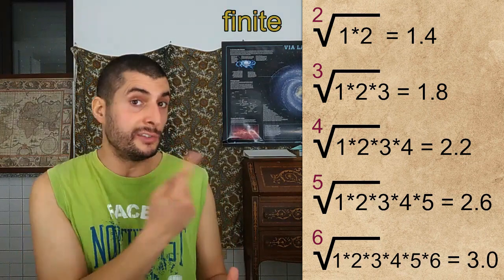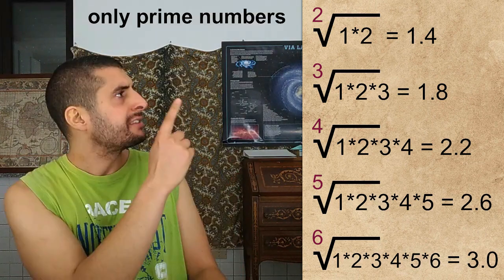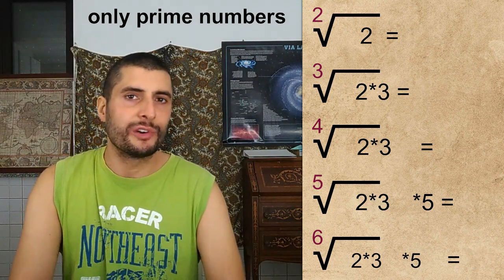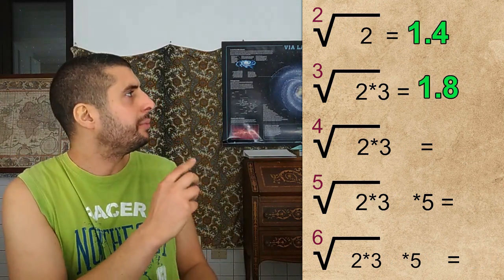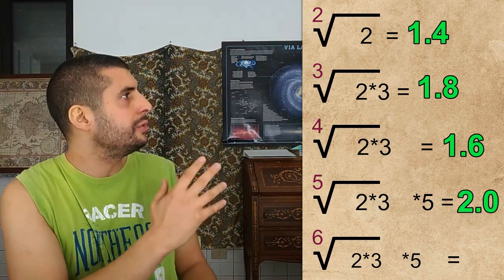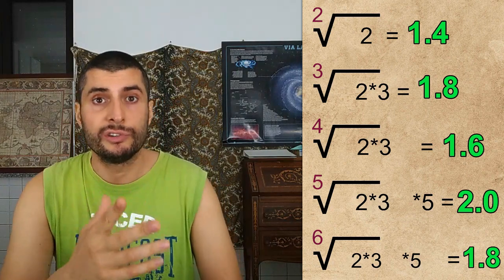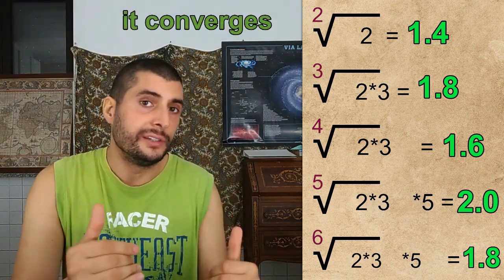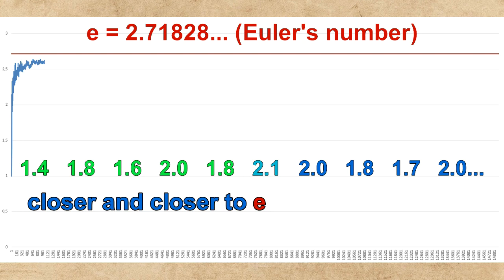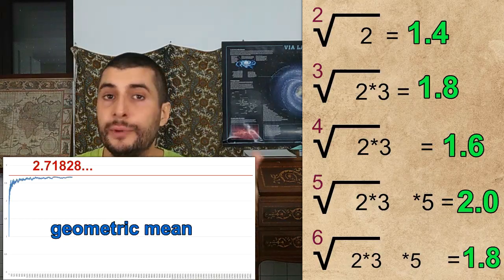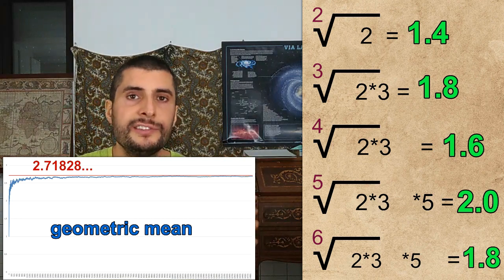Last chance. Let's try to make this one finite — let's keep only prime numbers. And... yes. It works. 1.4, 1.8, 1.6, 2. Even though this sequence looks like the other ones, it's not divergent — it converges. Instead of increasing indefinitely, it gets closer and closer to a number: E, 2.71828. Therefore, we can say that the geometric mean of all prime numbers, in this specific case, is E.